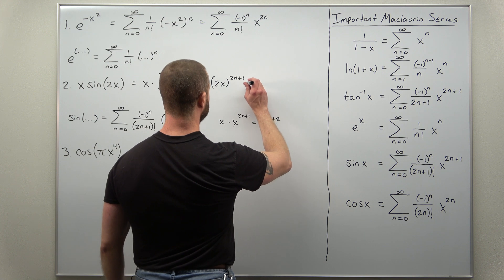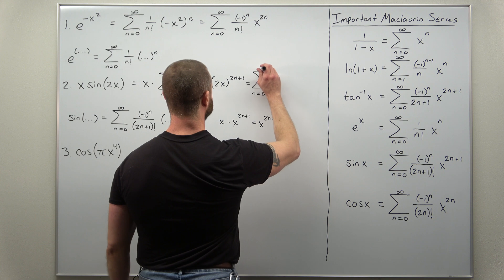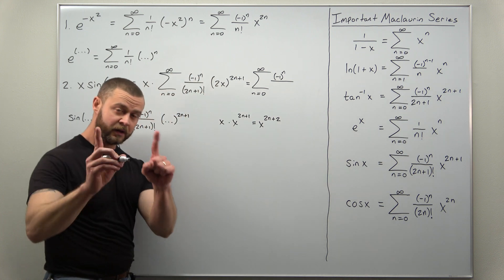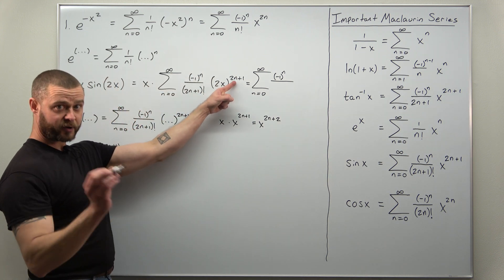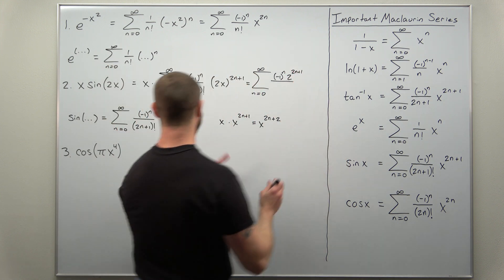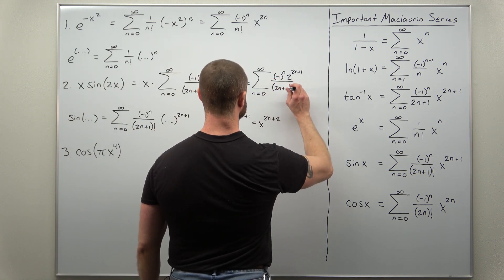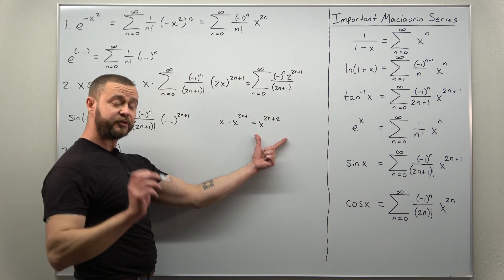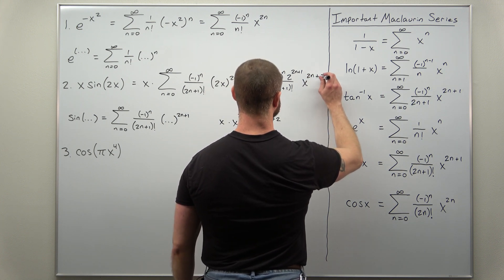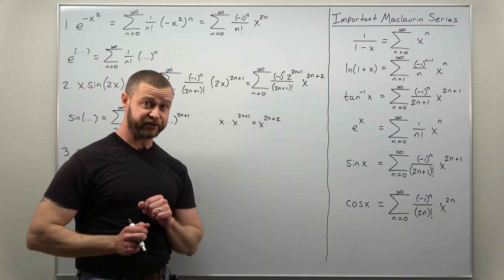We can rewrite the whole Maclaurin series in a much simpler form: bring the power of x in, add the exponents, and we get the sum going from n equals 0 to infinity of negative 1 to the n times 2 raised to the 2n plus 1 power, divided by 2n plus 1 factorial, and x raised to the 2n plus 2 power. That is our Maclaurin series for x times sine of 2x.